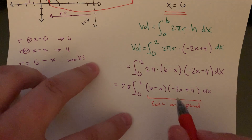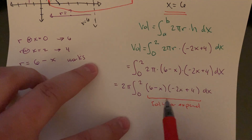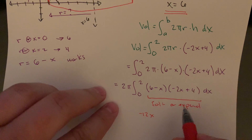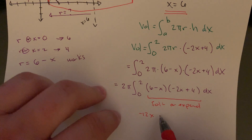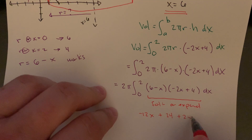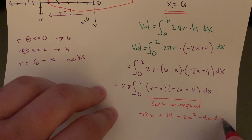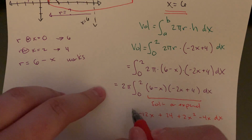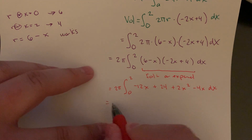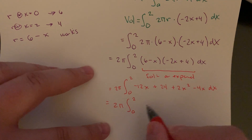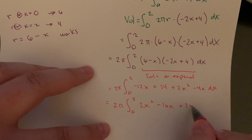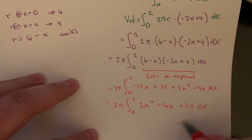Doing a quick FOIL: the outers give 24, the inners give plus 2x squared, and we also get minus 12x and minus 4x. Collecting terms and putting them in descending order, from 0 to 2 we get 2x squared minus 16x plus 24 dx, with 2 pi out front. That's the setup — we could keep going from there.